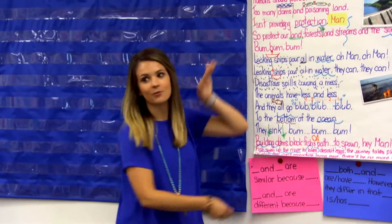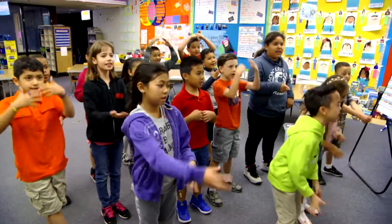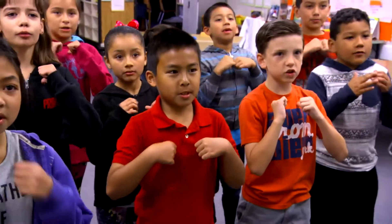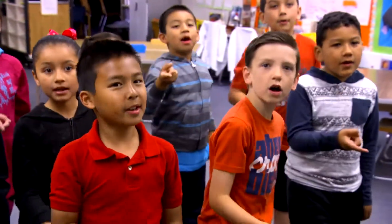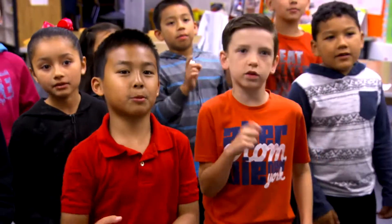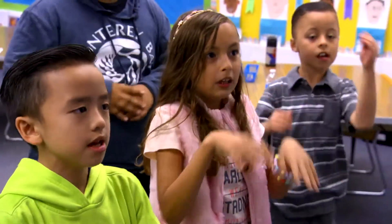To get started, let's start with our chant, Protecting the Environment. The class began today with a chant about the ocean ecosystem, particularly about issues of pollution and the problem of adaptation in an environment that is changing due to things like pollution. Humans should protect the earth, they must, they must. Too many dams and poisoning land isn't providing protection — so protect our land, forests and streams and the sea.